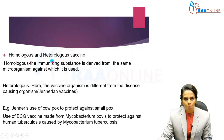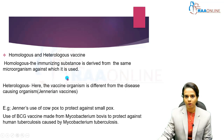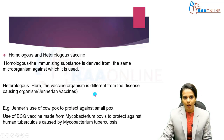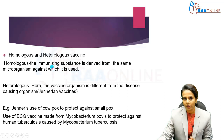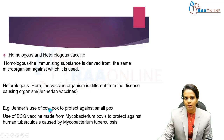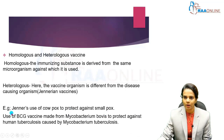Vaccines are also classified as homologous and heterologous. In homologous vaccines, the immunizing substance is derived from the same microorganism against which it is used — most vaccines are of this type, such as COVID vaccines, where the immunizing substance is derived from the COVID virus. In heterologous vaccines, the vaccine organism is different from the disease-causing organism; these are called Jennerian vaccines. Examples include Jenner's use of cowpox to protect against smallpox, and the use of BCG vaccine made from Mycobacterium bovis to protect against human tuberculosis caused by Mycobacterium tuberculosis.